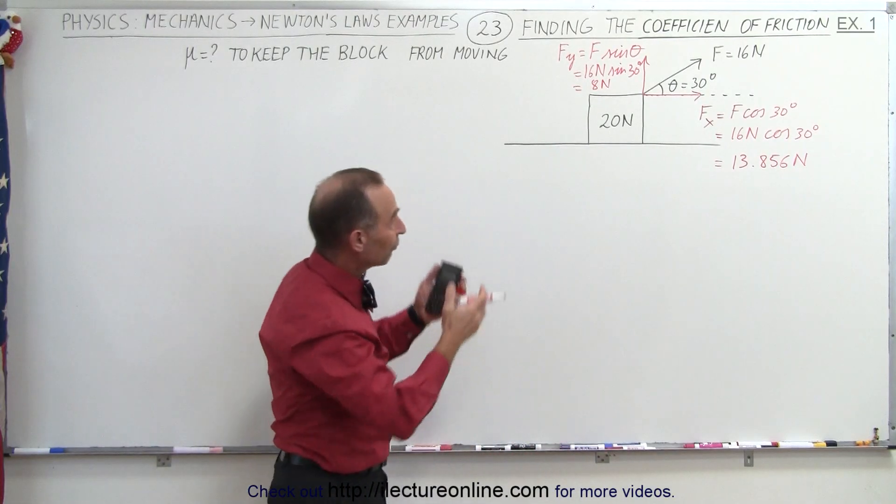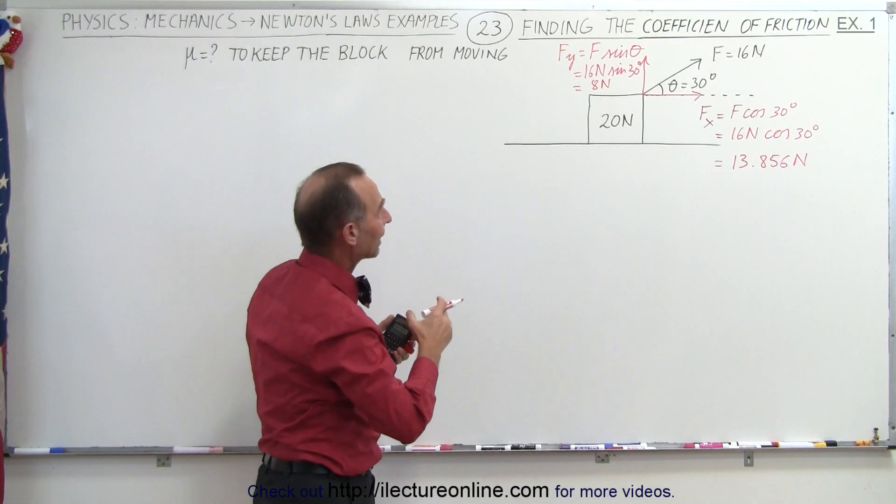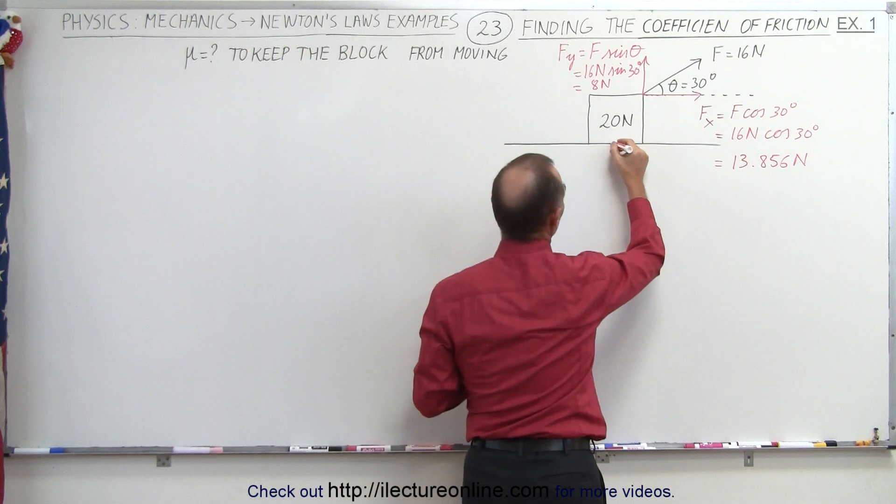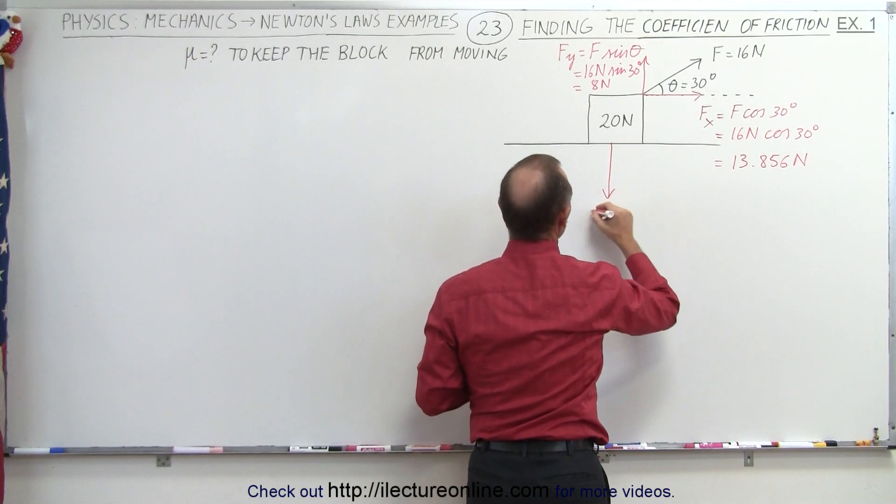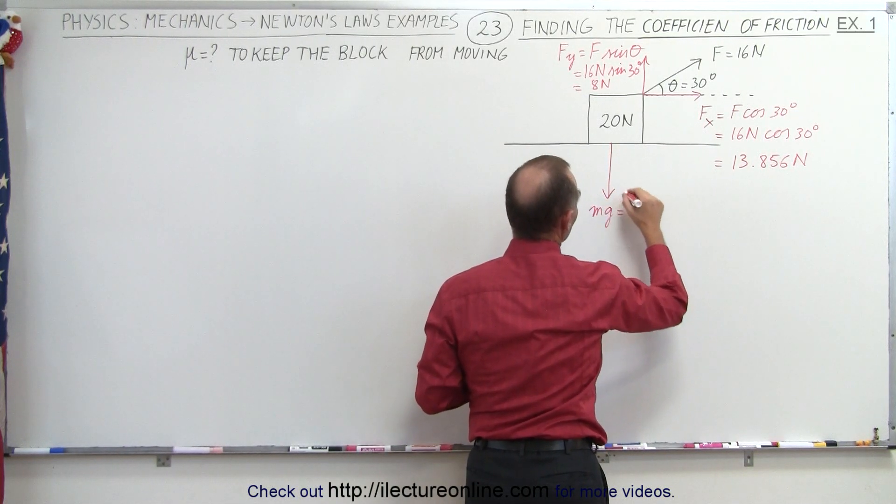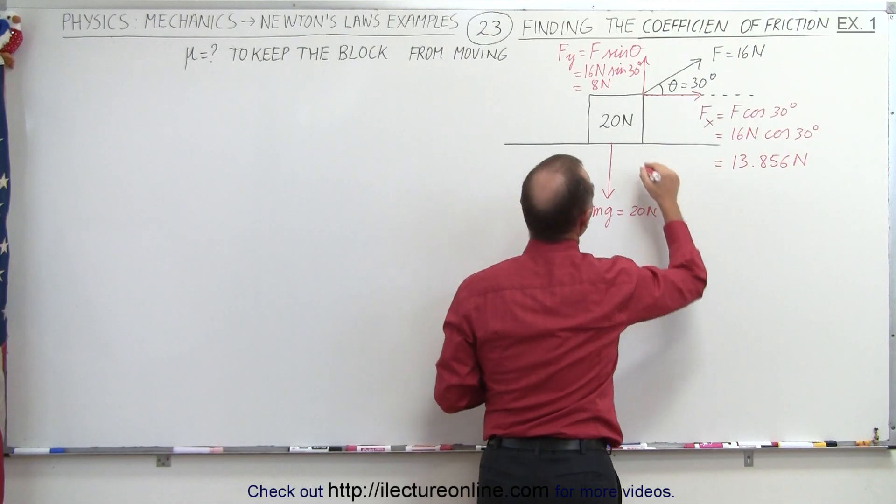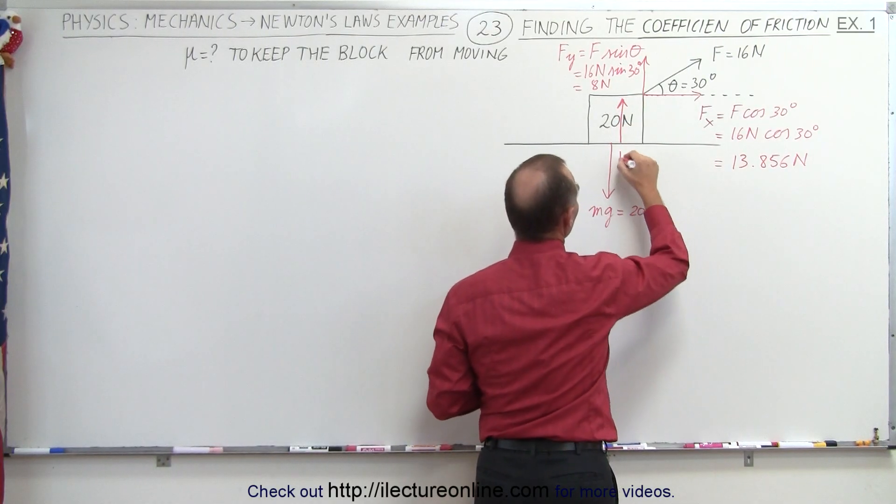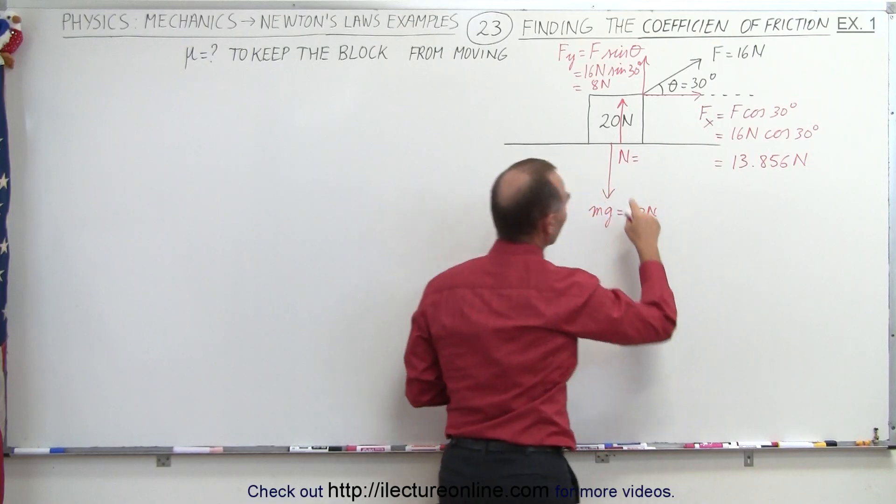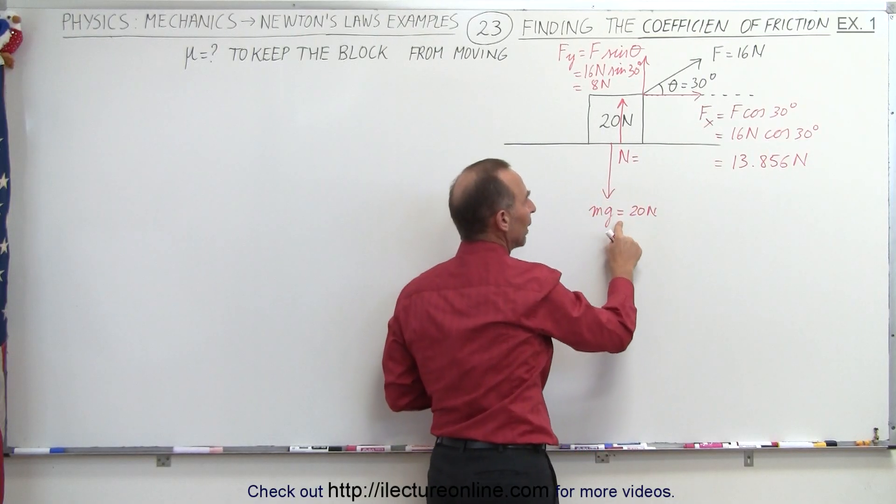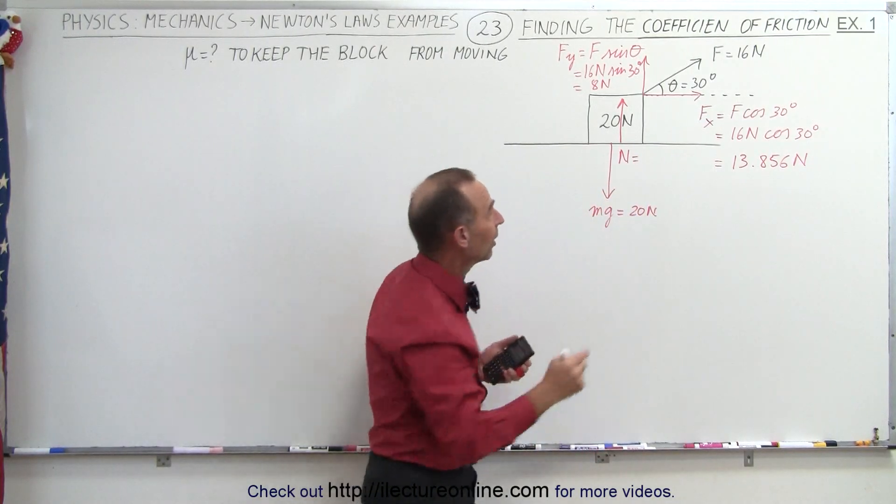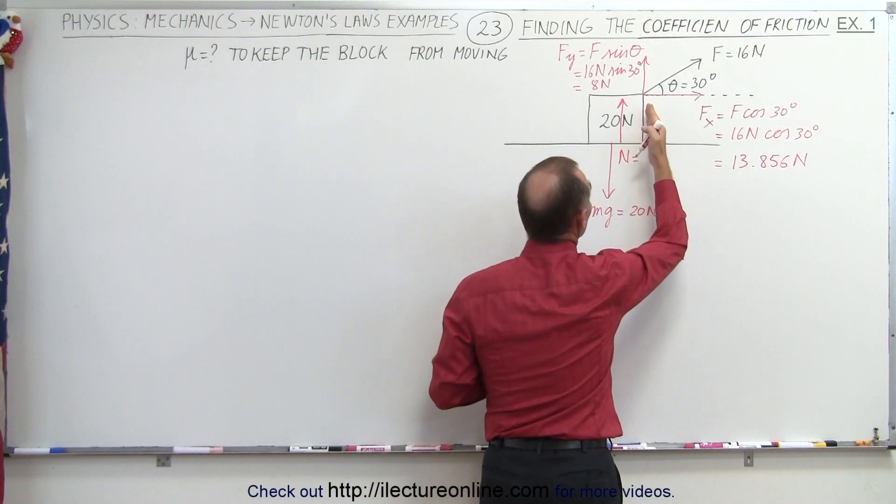We also have to think about the weight acting on the block. We have a force pulling down, which would be mg, and in this case that's equal to 20 newtons. Then there's a normal force pushing back. Now here we have to be careful. The normal force is not going to be equal to mg because there's also a force partially pulling up on the block with a force of 8 newtons.